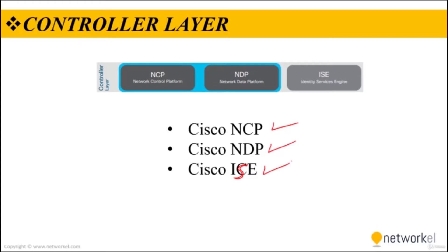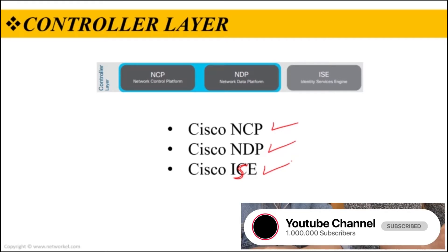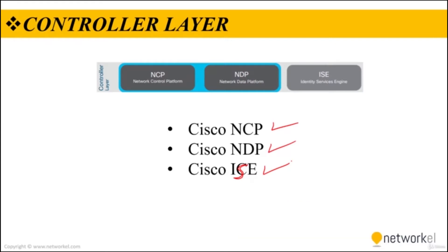NCP stands for Network Control Platform, NDP stands for Network Data Platform, and ISE stands for Identity Services Engine.